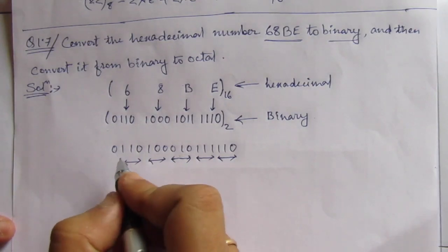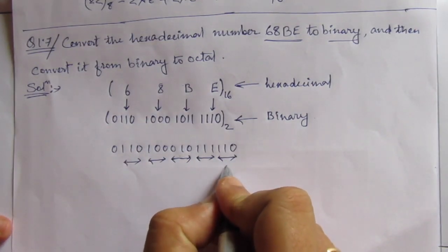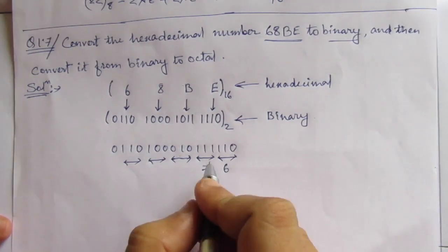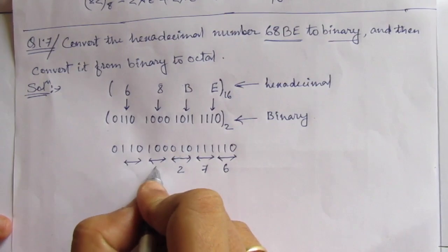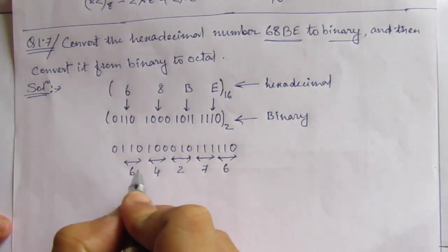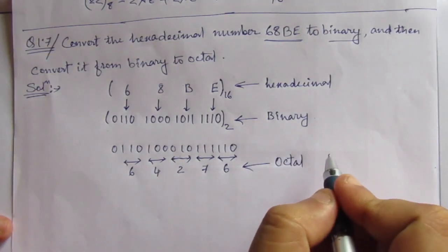This is discarded because it is 0, but this is nothing but 6. This one will be 7, then this is 2, and this one is 4, and this one is 6. This is the octal number.